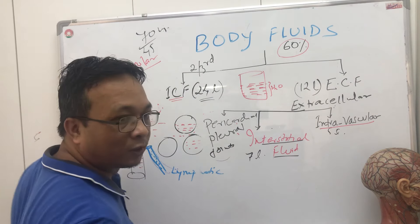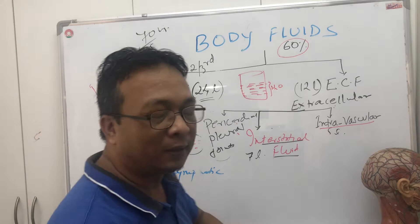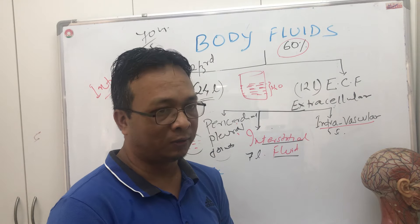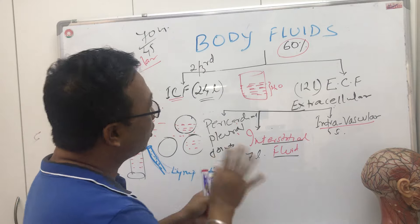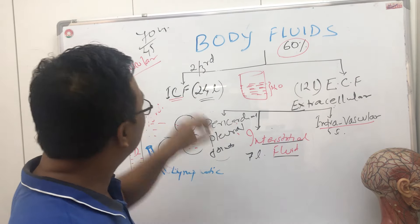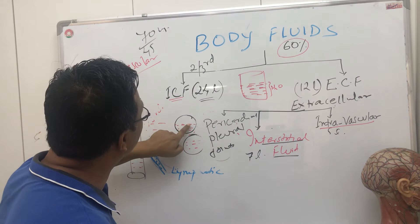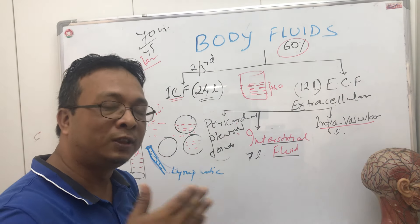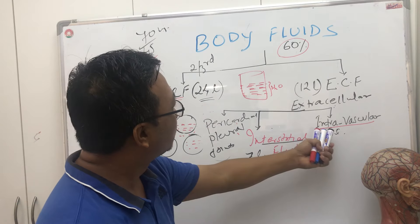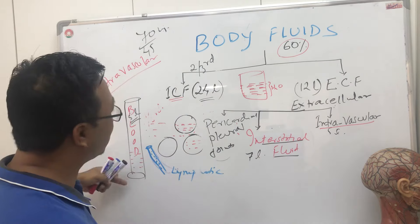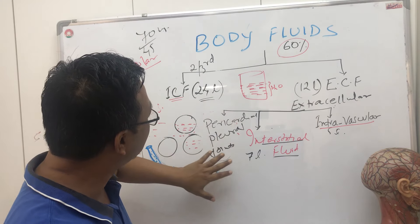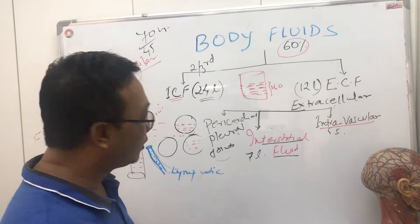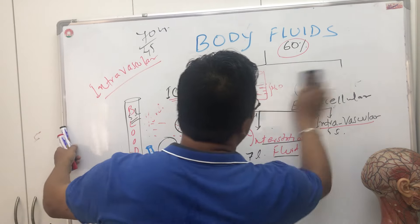Fluid is present in the joints — called synovial fluid — and in the eyes. There is fluid scattered all around the body, including in the kidneys. Everything outside the cells is extracellular. Intracellular fluid is 24 liters; five liters is in blood circulation; the rest is mostly in the interstitial space, and some is in the lymphatic system. Our cells are just submerged in fluid.